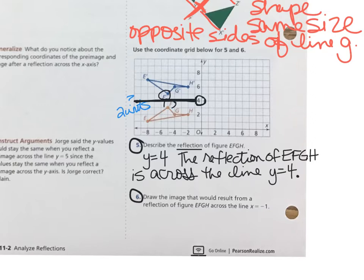Now take a look at number 6. Draw the image that would result from a reflection of the figure EFGH across the line X equals negative 1. So where's the point X equals negative 1? It's this point right here.